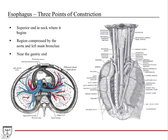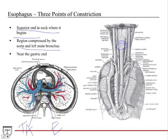The three points of constriction in the esophagus are high yield for anatomy exams. First, at the superior end in the neck where it begins, coming off the pharynx — that's where the upper sphincter is. Second, it can be compressed by the aorta and the left main bronchus as it travels between those two structures. Third, near the gastric end where it joins the stomach.